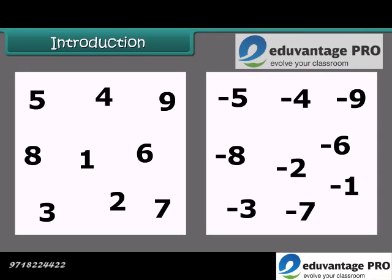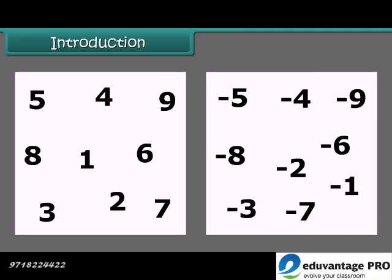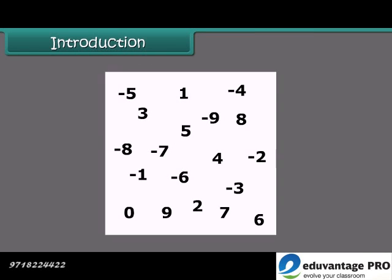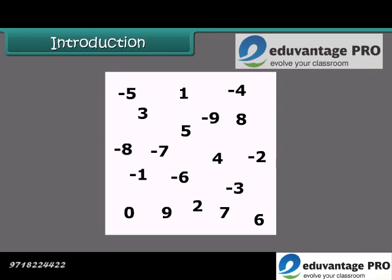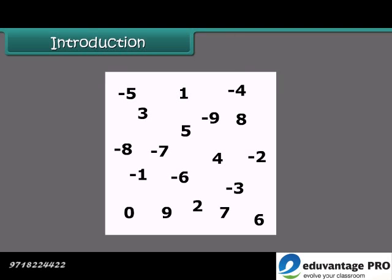Students, look at these numbers. These are the whole numbers. Now look at these numbers. These are the negative numbers. But what do we call a bigger collection of numbers which contains whole numbers and negative numbers? Those numbers are called integers. Come, let's learn more about integers.